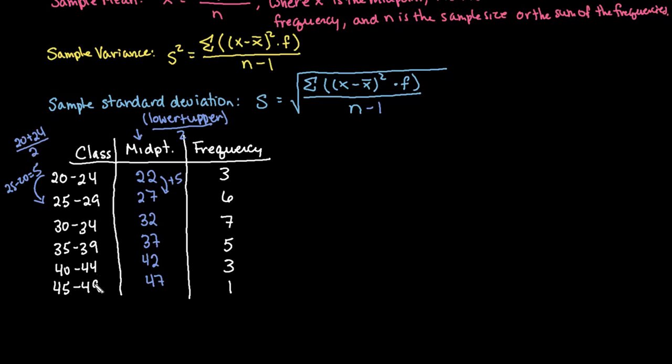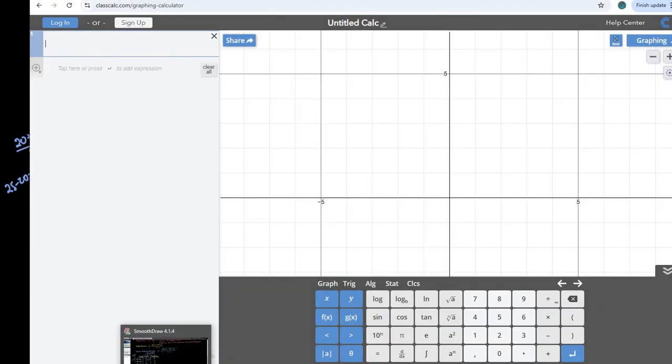And I find this process a lot easier than having to use this formula 6 different times. You're going to get the same result if I would have done 25 plus 29 divided by 2. It's still going to give me 27, it's just a lot easier to use the class width. So once you have the midpoint, we're going to put these values into x1 in ClassCalc, and we're going to put our frequency values into y1 in ClassCalc. So let me go ahead and pull that up.